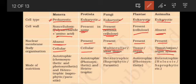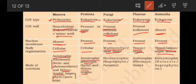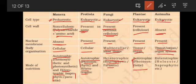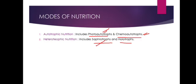Regarding modes of nutrition: Monera are both autotrophic (photosynthetic and chemosynthetic) and heterotrophic (saprophytic or parasitic). Protista are mainly autotrophic (photosynthetic) and some are heterotrophic. Fungi are mostly heterotrophic — saprophytic and parasitic. Plantae are autotrophic, primarily photosynthetic. Animalia are heterotrophic — holozoic or saprophytic. This concludes the five kingdom system of classification and biological classification.